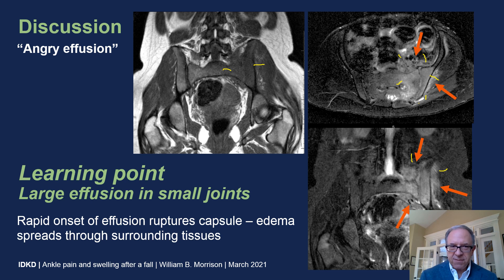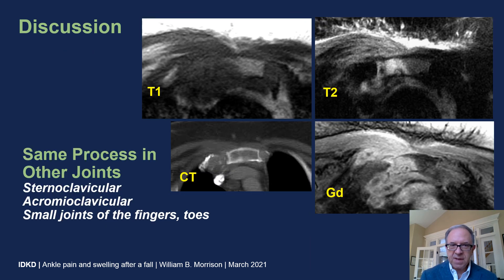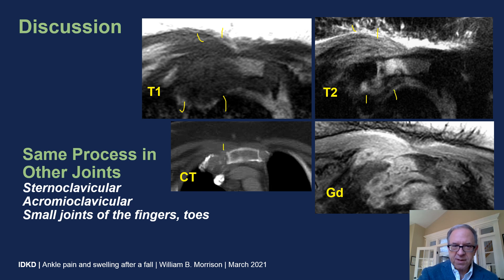This pattern is not specific for infection but should prompt you to look for other signs of infection. The same process occurs in other joints around the body, especially the smaller joints. At the sternoclavicular joint, we again see this diffuse soft tissue edema extending from the joint into the adjacent soft tissues, with erosions visible on CT.